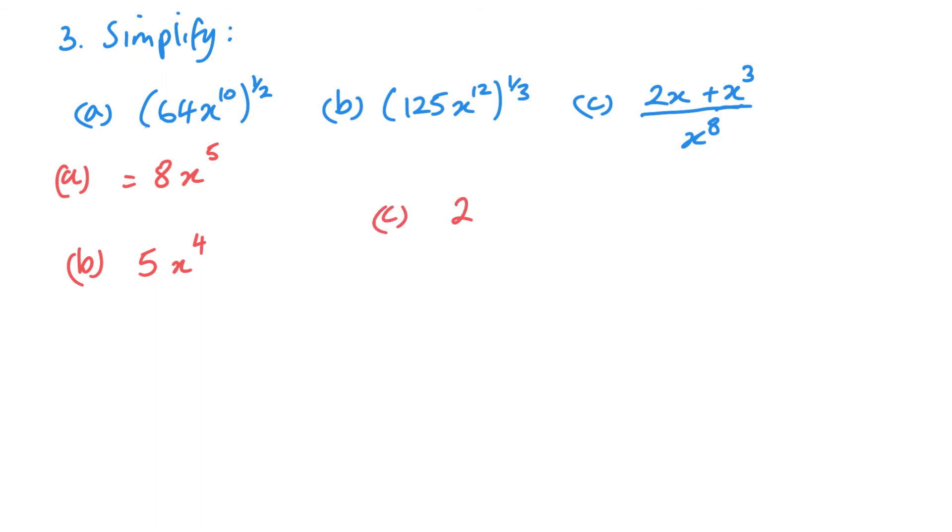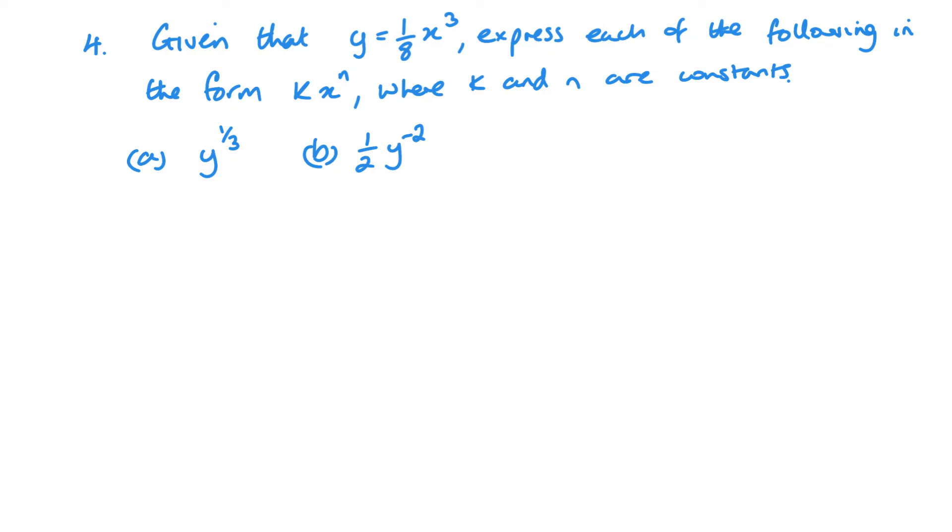And then part C. First we need to simplify by splitting my fraction up, and then essentially cancelling or using my rules. So 2x to the minus 7 plus x to the minus 5. And often you would leave these then as positive powers. If it's 1c2, it will often actually say in a question to leave as a positive power.